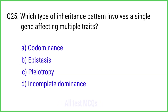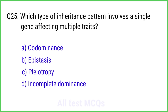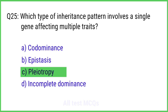Question No. 25. Which type of inheritance pattern involves a single gene affecting multiple traits? The right answer is Option C: Pleiotropy.